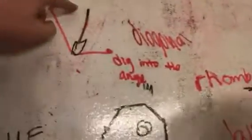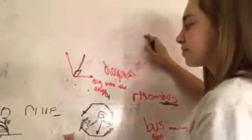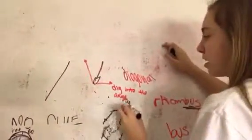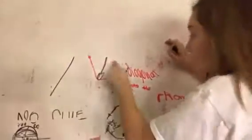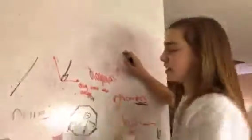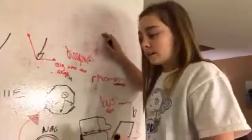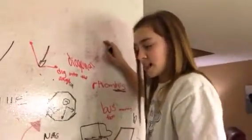Diagonal. Diagonal reminded me of dig. A diagonal line would be like a line digging into an angle, so we have a shovel that's digging into an angle. Is that making sense, everyone? Yes or yes? Comment below.